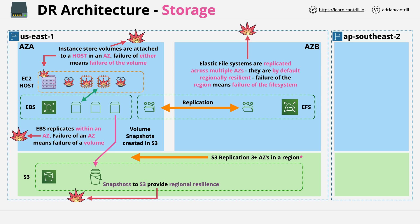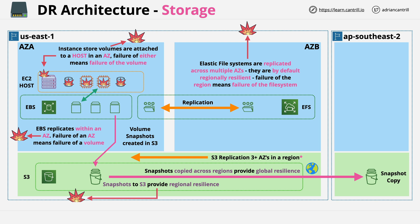If you need even more resilience to cope with larger disaster events, you can look at a global level of recovery capability. You could, for example, copy an S3 snapshot between AWS regions, meaning that even a region failure wouldn't impact data because it's now stored in multiple locations globally. With that snapshot copy created in the AP Southeast 2 region, you could then create a new EBS volume from it running in one AZ, and attach it to an EC2 instance also in one AZ running on one single EC2 host. It's important to fully understand how much of the AWS global platform would need to fail in order to affect data stored on each of these services.